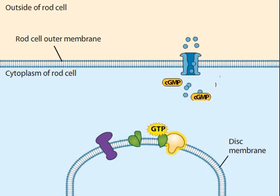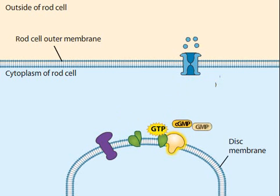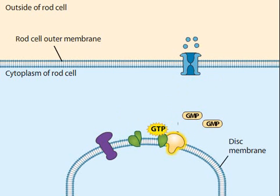Activated phosphodiesterase then converts cyclic GMP to GMP. The reduction in cyclic GMP inside the cell allows the sodium channels to close. Pumps in the cell membrane continuously work to drive sodium ions out of the cell, so the cell can now become more negative. The membrane hyperpolarizes.